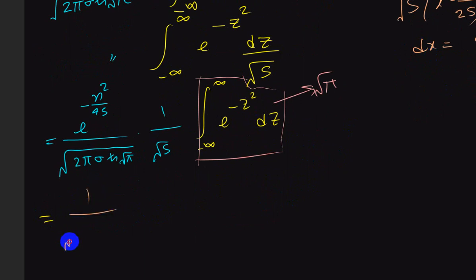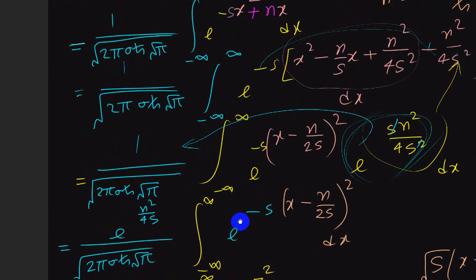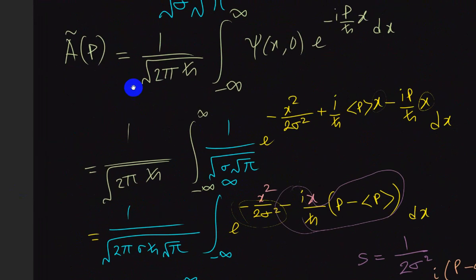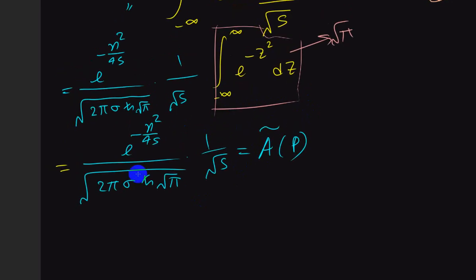Putting it all together, φ(p) = e^(−n²/4s) / (√(2πσℏ√π) · √s) · √π. This is our momentum domain expression φ(p). The key Gaussian integral formula we used is: ∫ e^(−sx² + nx) dx = e^(n²/4s) · √(π/s), which evaluates the integral directly.